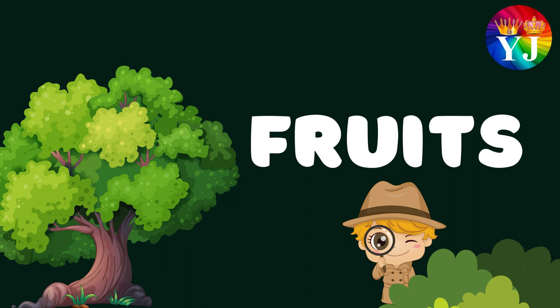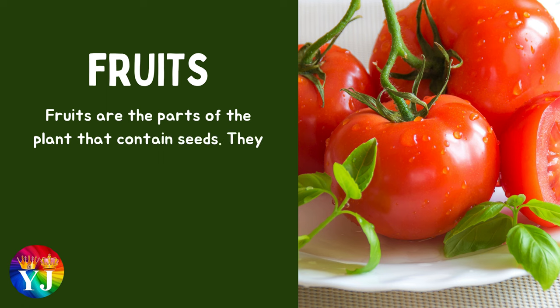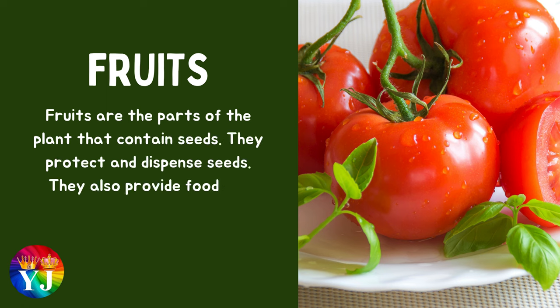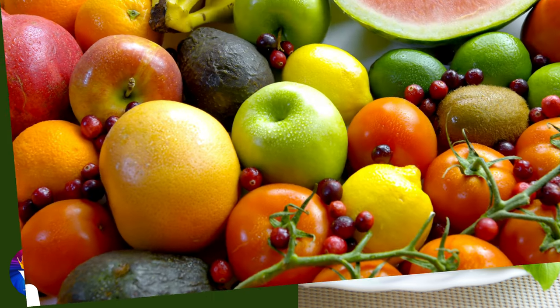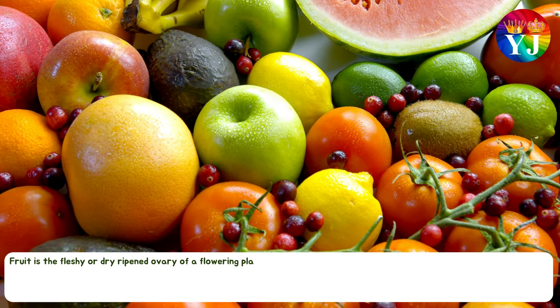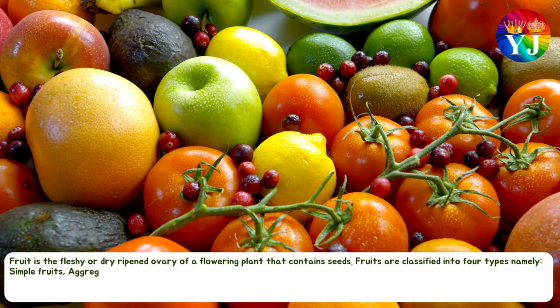Fruits are the parts of the plant that contain seeds. They protect and disperse seeds. They also provide food for animals. They are typically sweet or tart in taste and can be eaten raw or cooked. Fruit is the fleshy or dry-ripened ovary of a flowering plant that contains seeds.